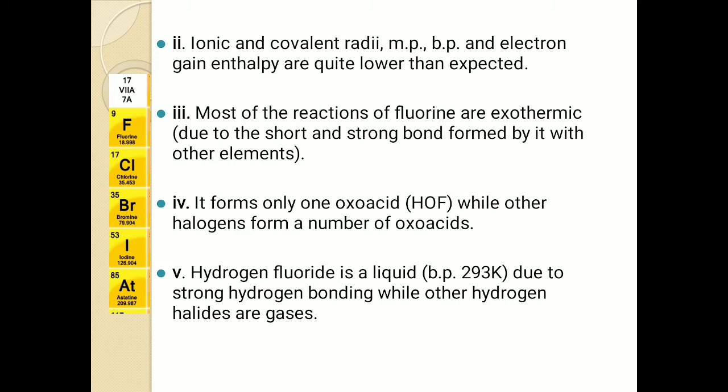The next anomalous properties are ionic and covalent radii, melting and boiling point, and electron gain enthalpy. We have studied the trends — they increase down the group, meaning fluorine should have lower values. These values are in fact lower than expected — there is a big gap between these properties of fluorine and the rest of the members, meaning these values are exceptionally low in the case of fluorine.